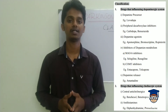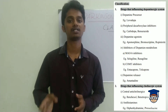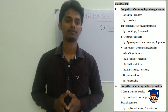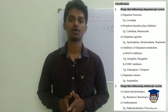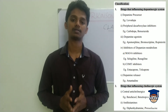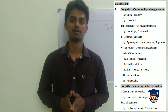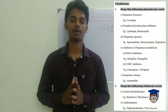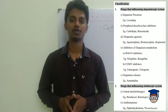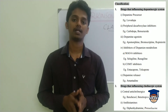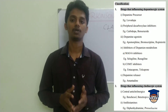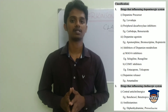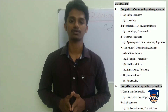Next is dopamine release. Drugs that stimulate dopamine release — for example, Amantadine. These drugs influence the dopaminergic system. There is another category: drugs influencing the cholinergic system, such as anticholinergic agents, though these are less often used.